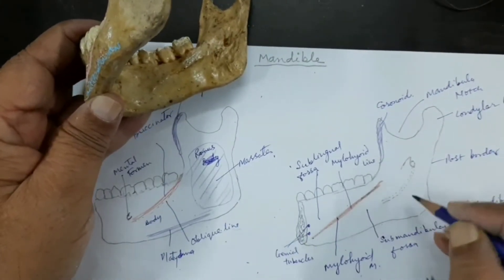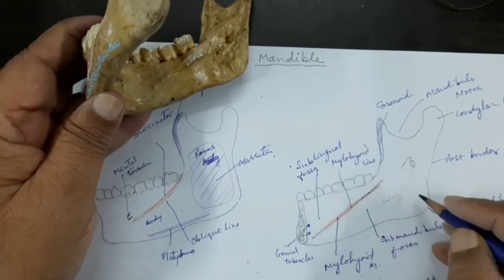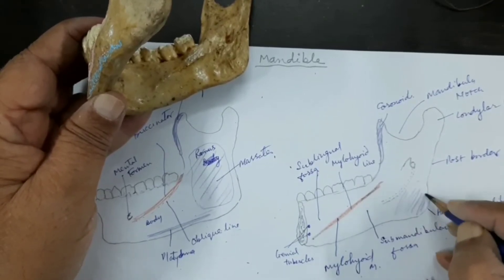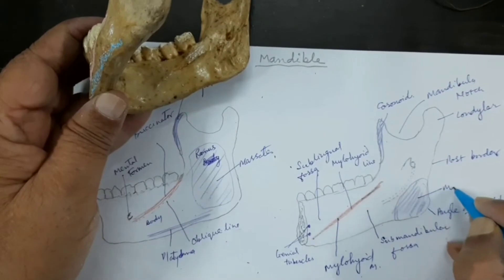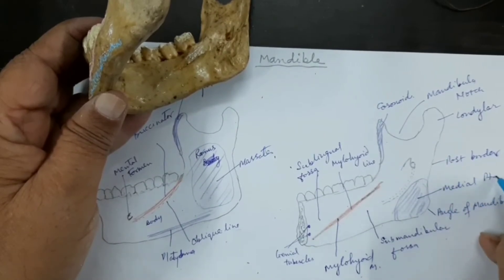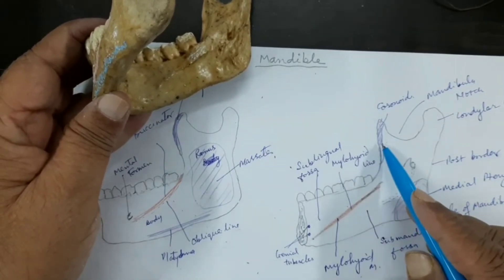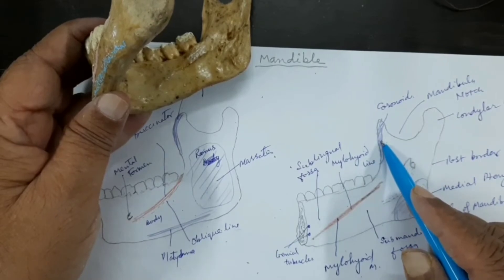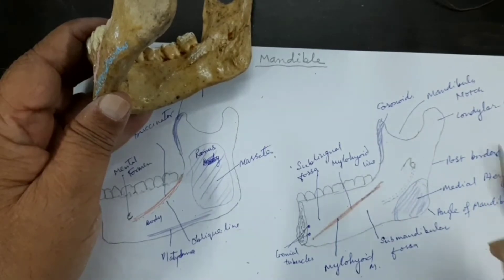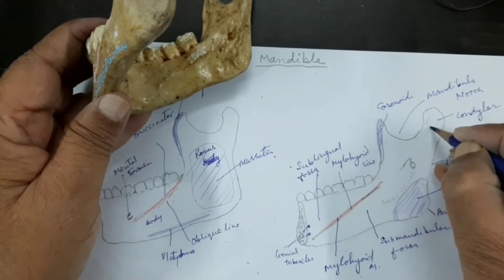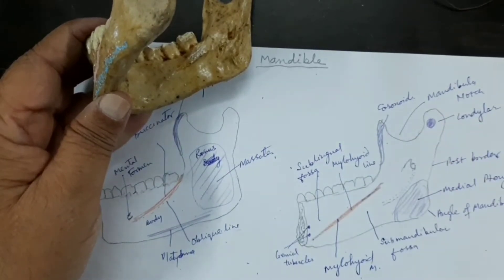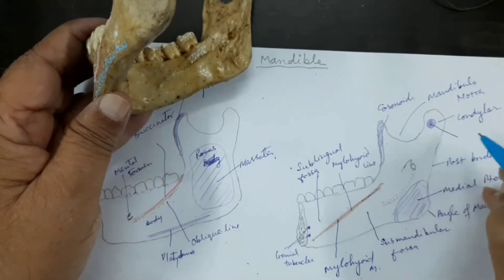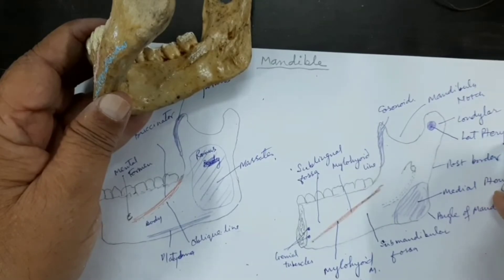The insertion will be here at the angle — on the medial surface where a deep rough surface is present. This gives insertion to the strong muscle called medial pterygoid, a muscle of mastication. We have already seen temporalis on the coronoid process. In the pterygoid fovea on the anterior surface of the neck of the mandible, there is a deep depression, and that insertion is for the lateral pterygoid muscle.